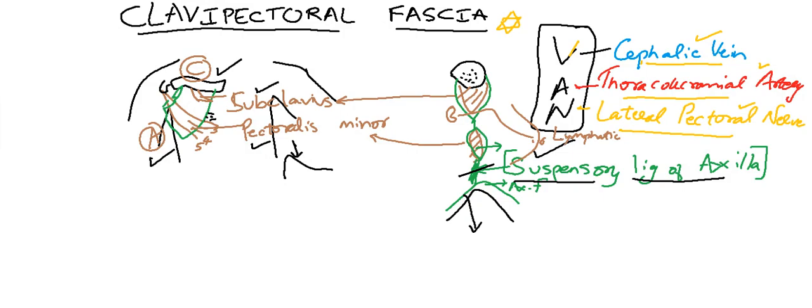So clavipectoral fascia is a fibrous sheath. The posterior lamina can go and enclose the axillary sheath and even the investing layer of deep cervical fascia. Structures piercing clavipectoral fascia is remembered by mnemonic VAN. One vein, one artery and one nerve. Cephalic vein, thoracoacromial artery, lateral pectoral nerve. The lymphatics from the mammary gland also uses the clavipectoral fascia to reach the apical group of axillary lymph nodes.